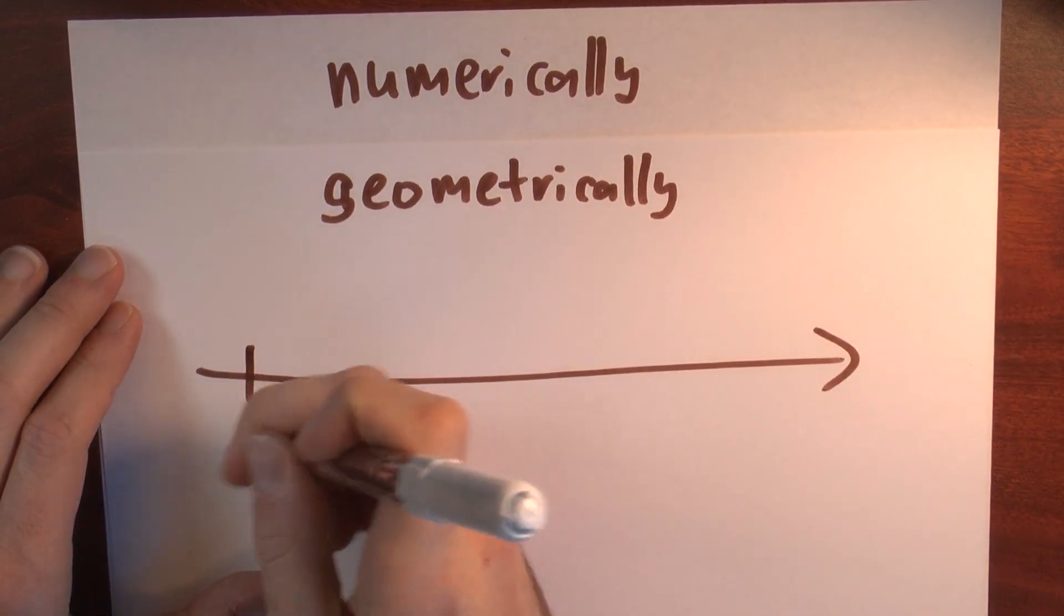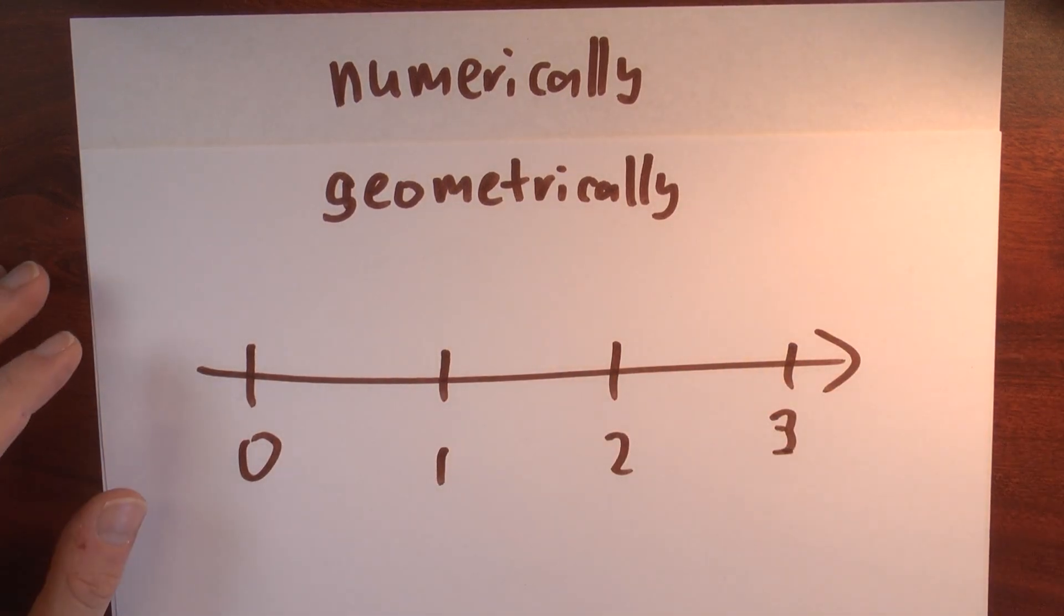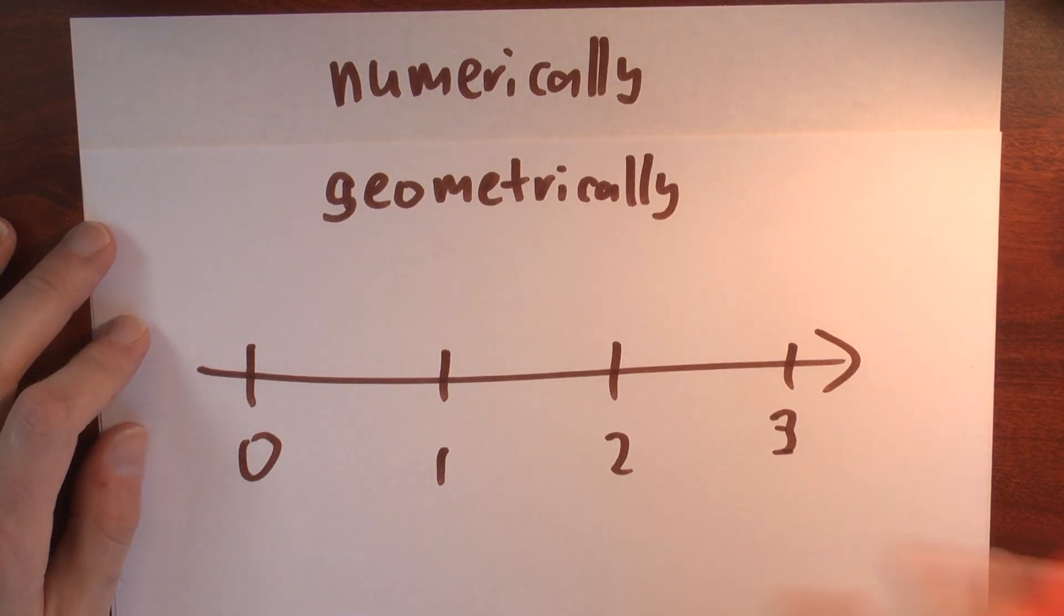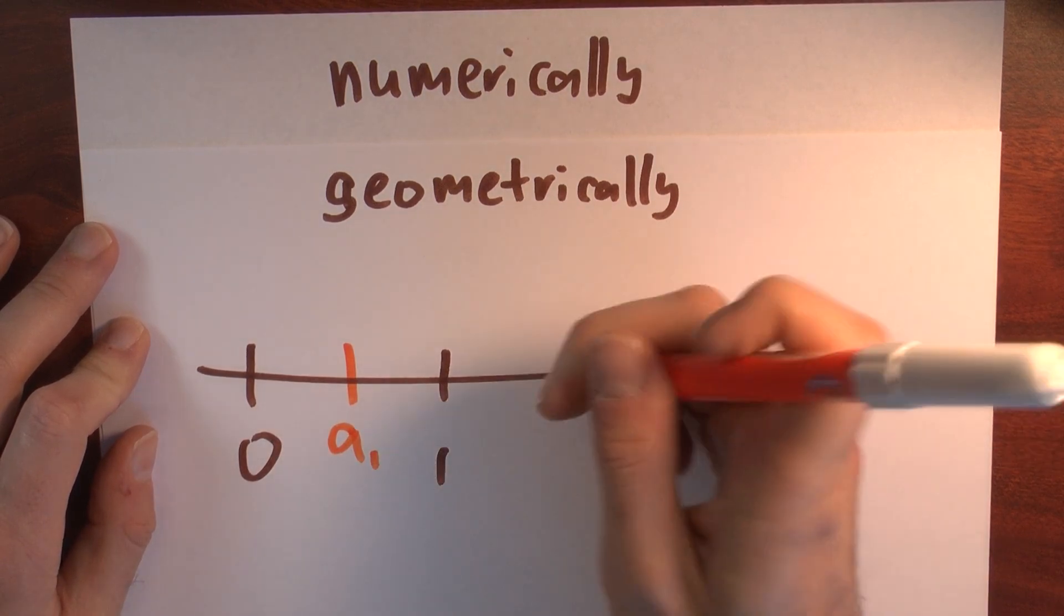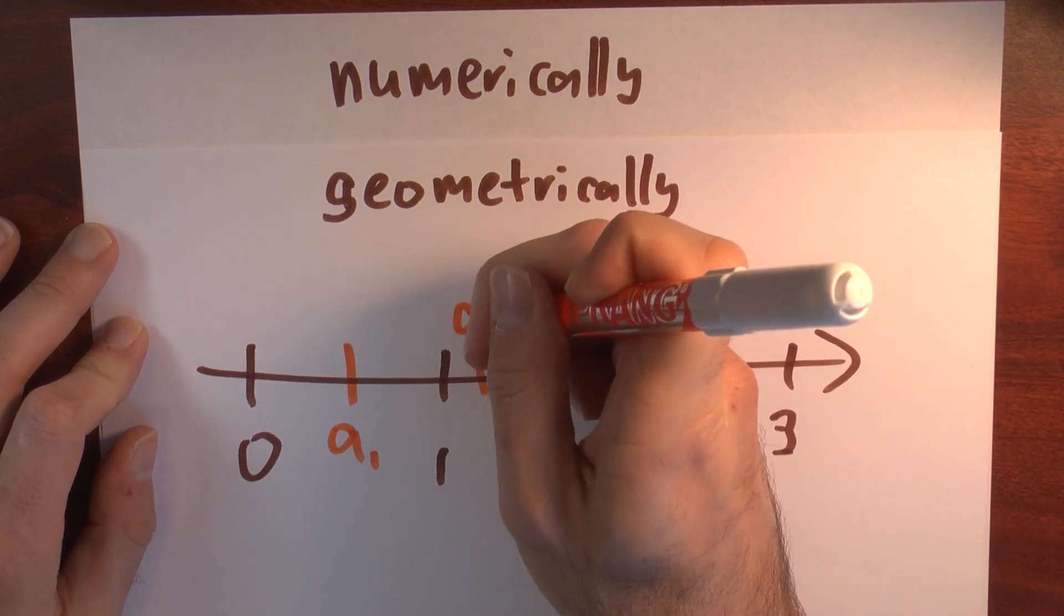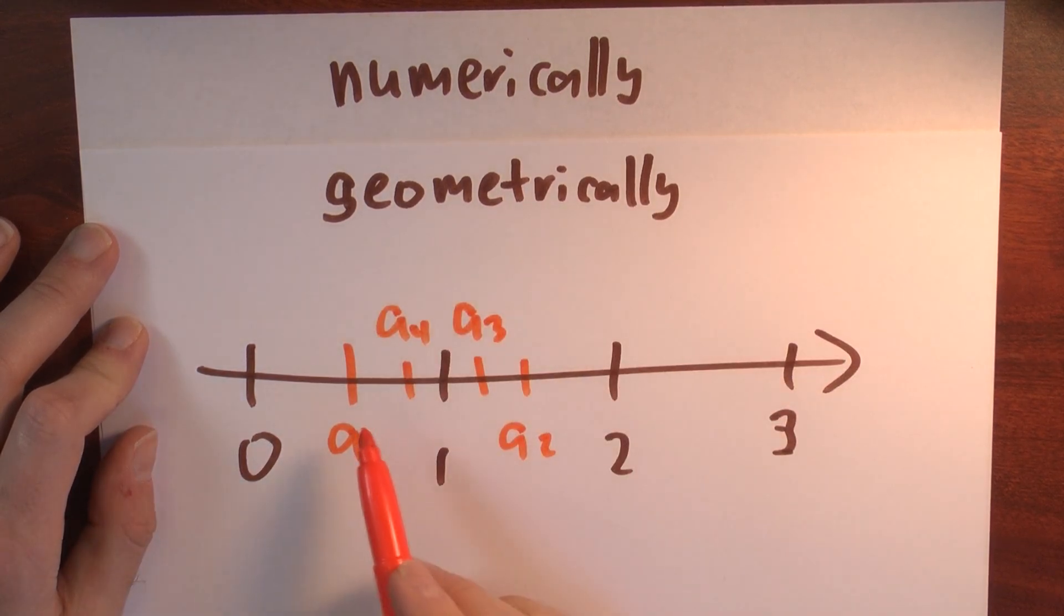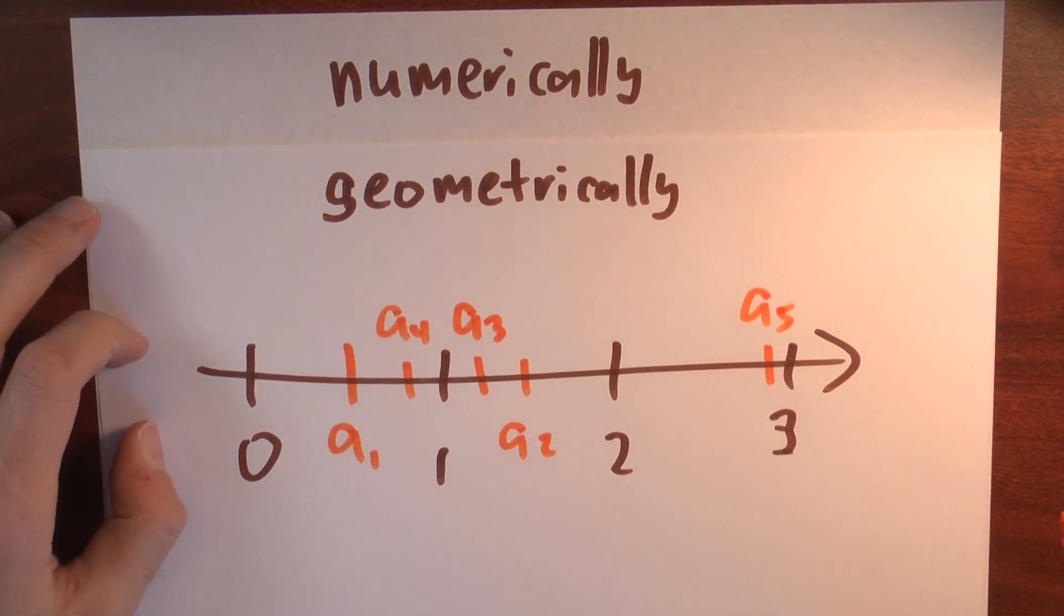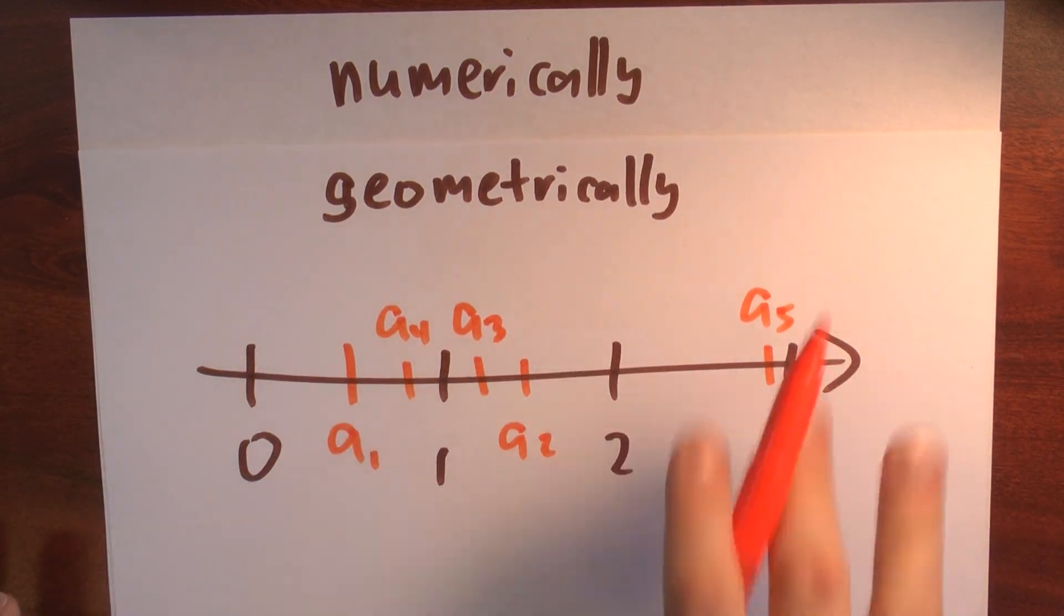For example, here's a number line. Say here's 0, here's 1, here's 2, here's 3, and it would keep on going. I could try to plot the terms of my sequence on this number line. You could imagine some sequence where the first term is here between 0 and 1, the second term is between 1 and 2, maybe the third term is here between 1 and the second term, maybe the fourth term is over here between a sub 1 and 1, maybe the fifth term is over here just a little bit less than 3. You could plot the terms in your sequence to try to get some idea about what the sequence looked like.